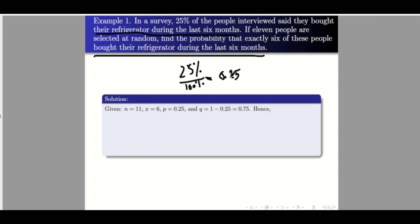We cannot use the percentage directly in computation, so we must convert it to decimal by dividing by 100%, giving us p equals 0.25. For q, the probability of failure, we use one minus p: one minus 0.25 equals 0.75.